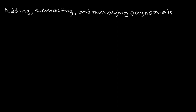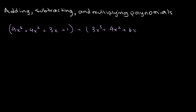So let's take the example of 4x cubed plus 4x squared plus 3x plus 1. This is our first polynomial, and we want to add another polynomial, which is 3x cubed plus 4x squared plus 6x plus 2.